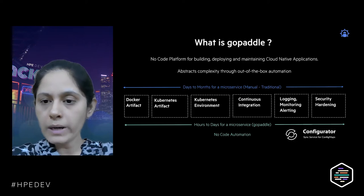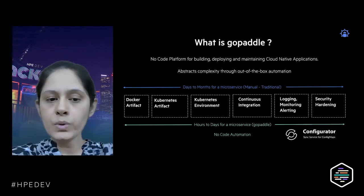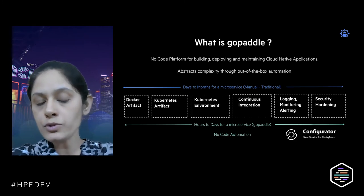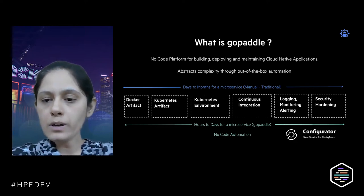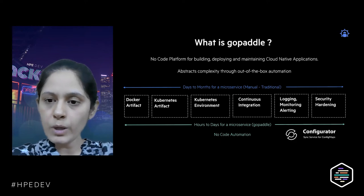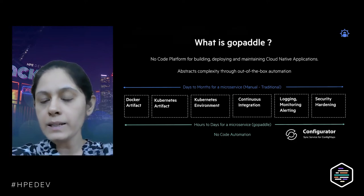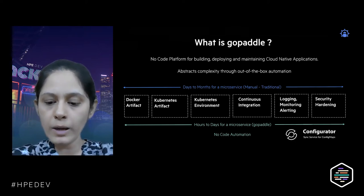GoPaddle also provides guardrails for building containers with all security aspects right from day one, so the whole process happens in a no-code fashion. Whatever used to take days to months to transform now takes a couple of hours. It is built on top of another open-source project called Configurator, which keeps config maps in sync with deployments by version controlling them. At any point if anything goes wrong, it's possible to revert back to a specific state across both the deployment and the config maps, giving more predictable deployments and rollbacks.